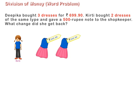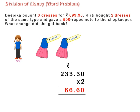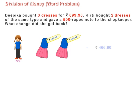Now, Keerti bought two such dresses. So, we will multiply Rs. 233.30 by two. So, Keerti spent Rs. 466.60 for buying two dresses.